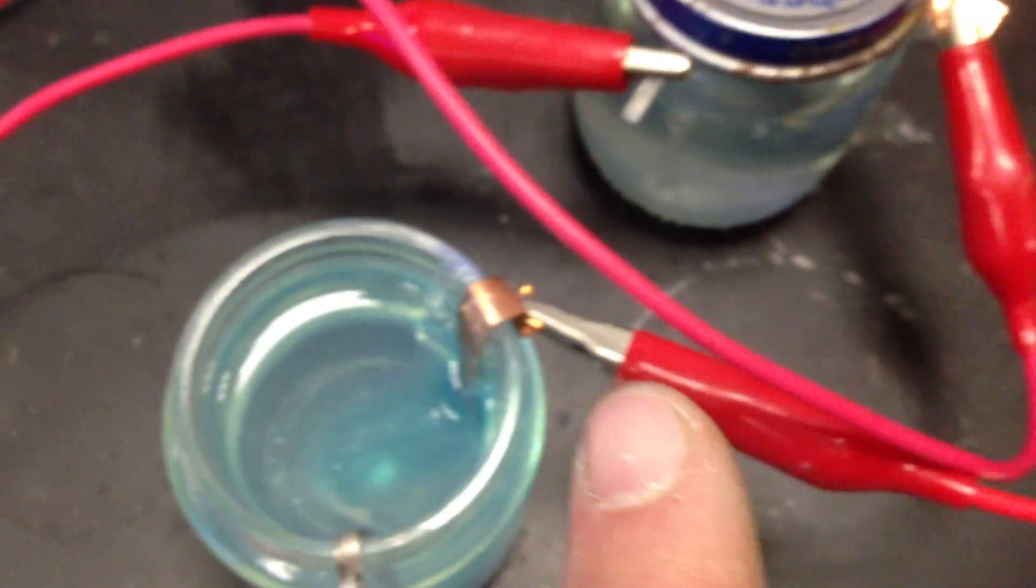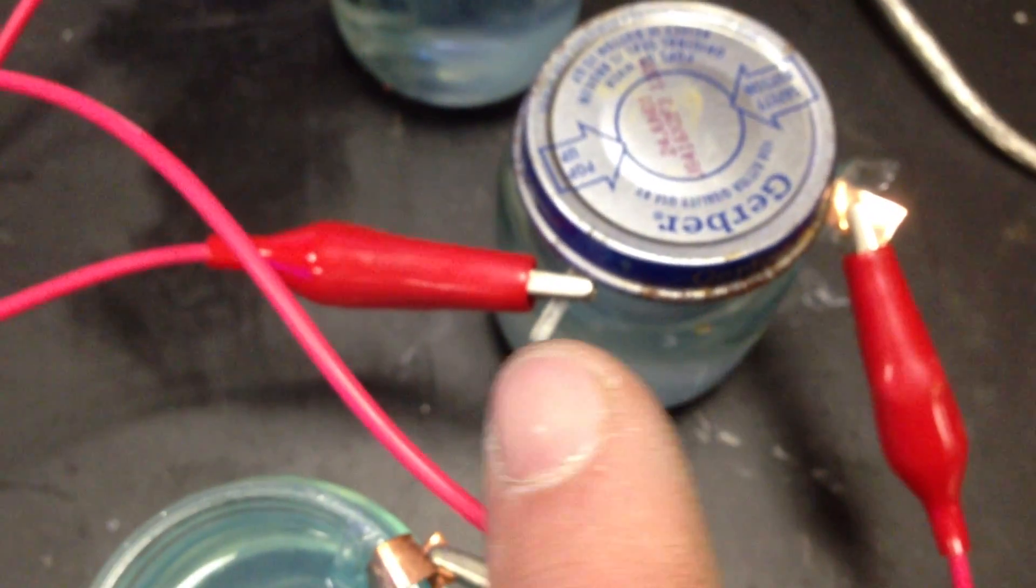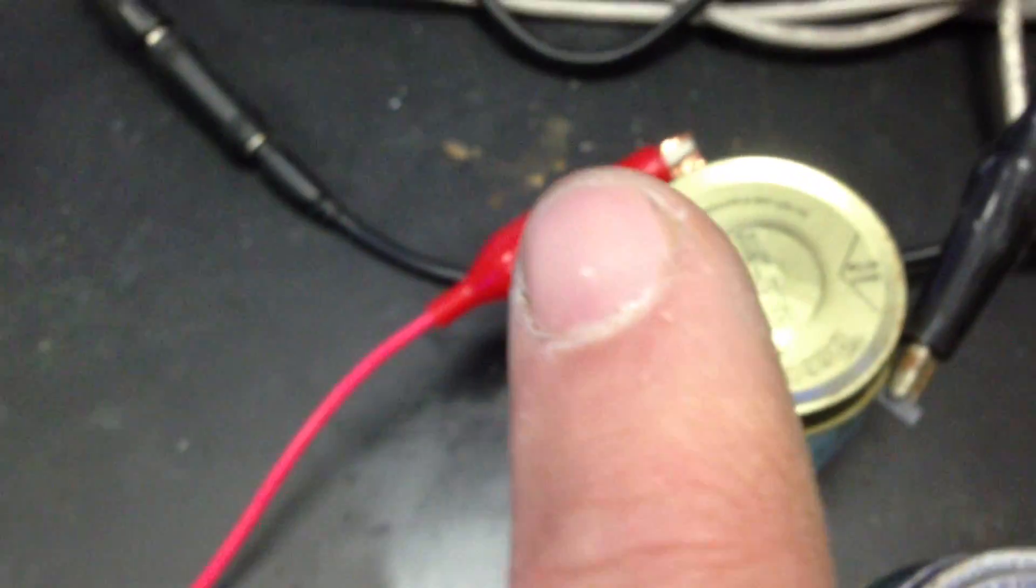And this anode, follow my finger, goes to the cathode of this battery, anode back to the battery, and we have a series circuit.